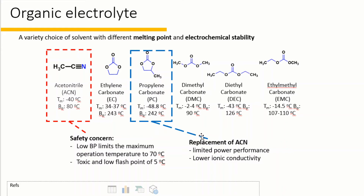Replacement of acetonitrile with propylene carbonate (PC) is a little safer and offers a similar melting point of about negative 50 degrees C. However, propylene carbonate shows lower ionic conductivity, which limits the power performance of PC-based electrolyte.